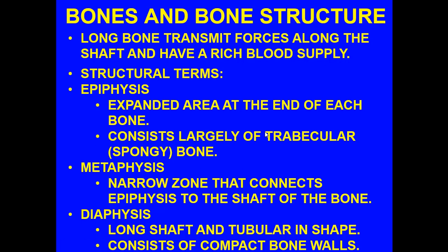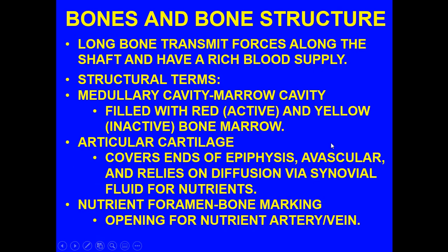The long bone transmits forces along the shaft and will have a rich blood supply. One key difference is that bone tissue has a vascular blood supply, whereas cartilage does not. The epiphysis is the expanded area at the end of each bone and consists largely of trabecular, that is spongy, bone. The metaphysis is a narrow zone that connects the epiphysis to the shaft. The diaphysis is the long shaft, tubular in shape, consisting of compact bone walls that are essential to support the upper or lower limbs.